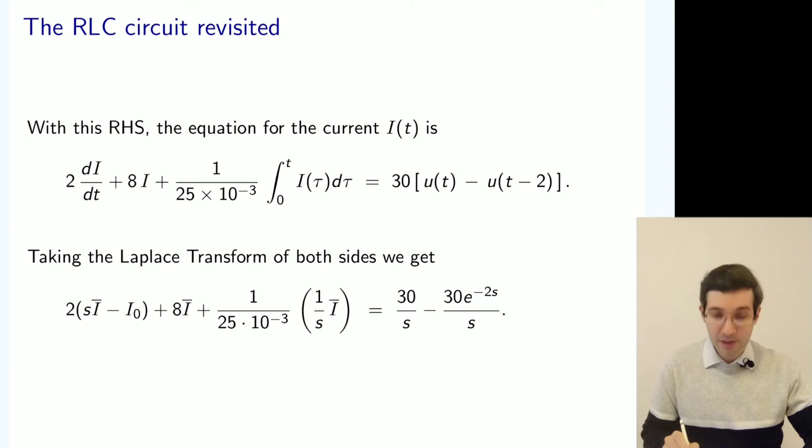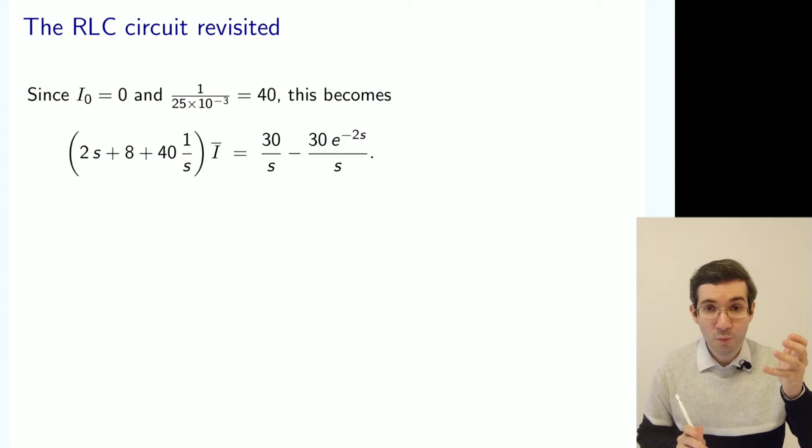And because we didn't have any electric current in the circuit, we get rid of this constant.